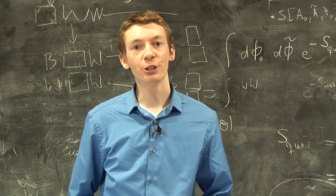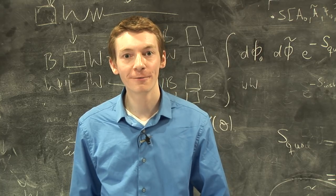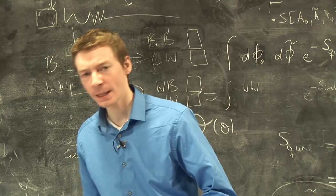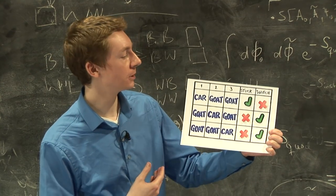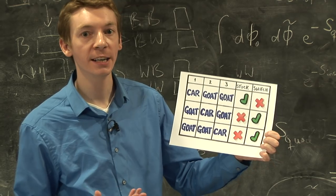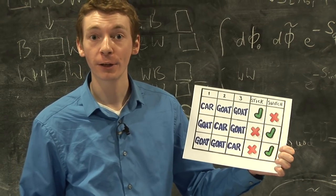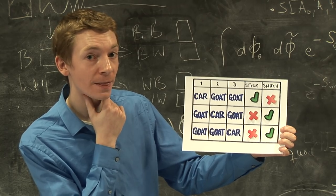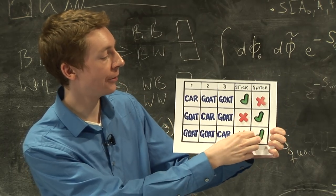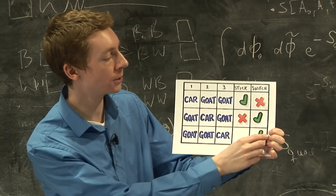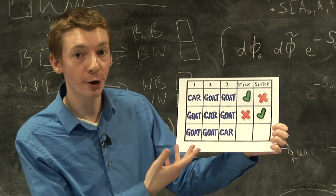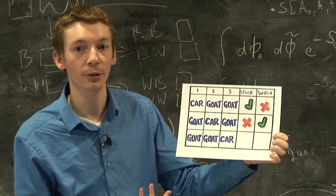So the reason this fools you is because it's not genuinely random. If it was genuinely random, it would look something like this. Monty Hall would open, say, door number 3 without knowing what's behind it. So he might accidentally reveal the car. If he opens door number 3 and reveals a goat, that means we're not in that third case. So we can get rid of those. And that's what we're left with. And as you can see, it becomes 50-50 if you change your mind or not.